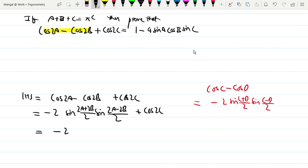Now -2sin(a+b) is common, then we have sin(a-b), and + cos(2c). Now let's transform sin(a+b). Since a + b + c = 180°, a + b will be 180° - c.